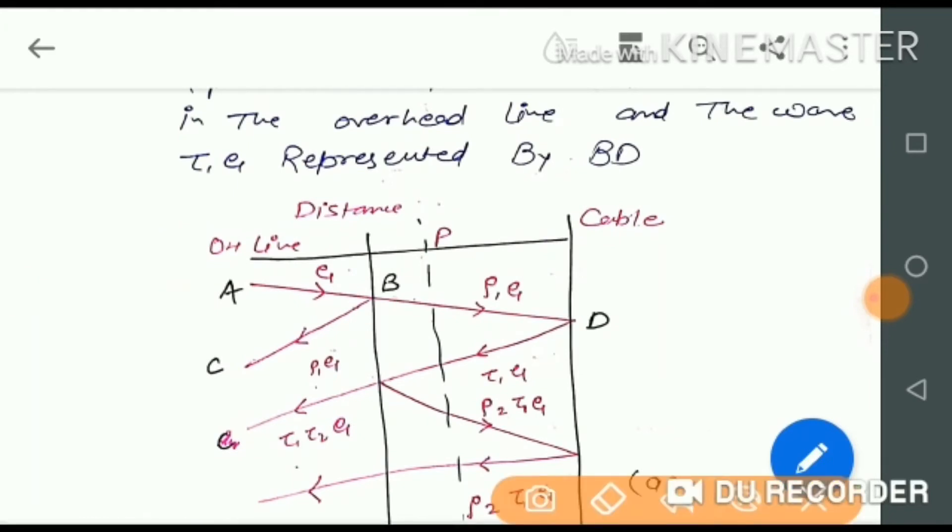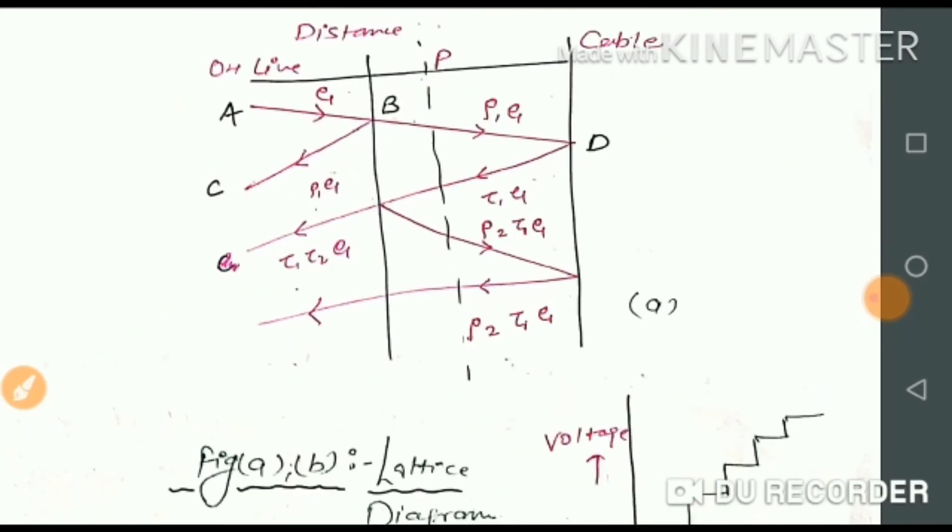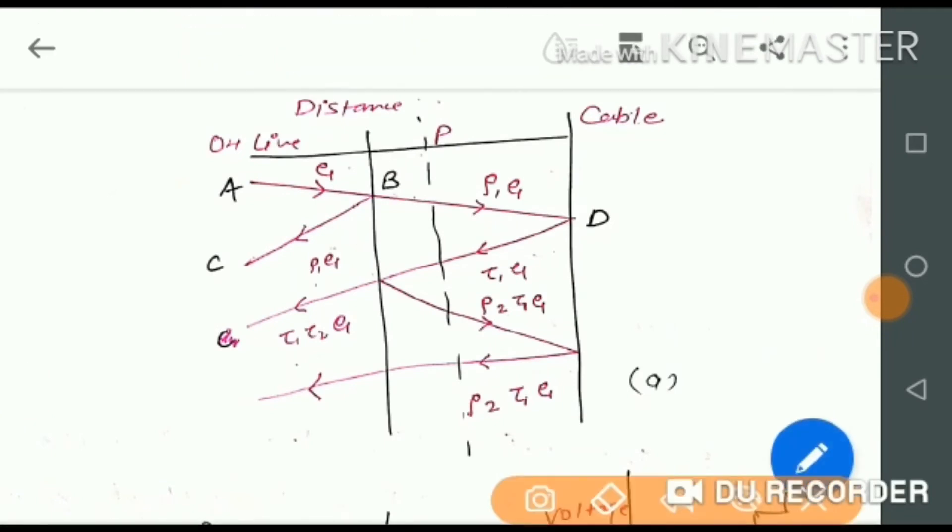Here we have the overhead line and the cable. We have shown two points: A, B, C, and D. Point A is the input here.